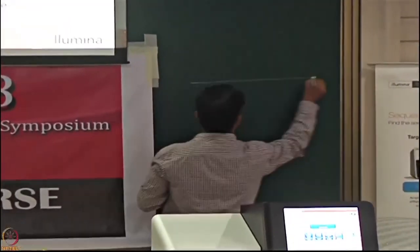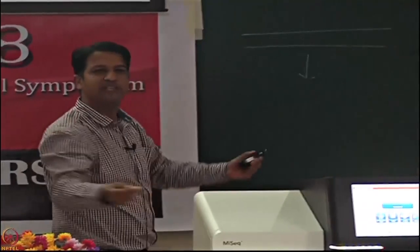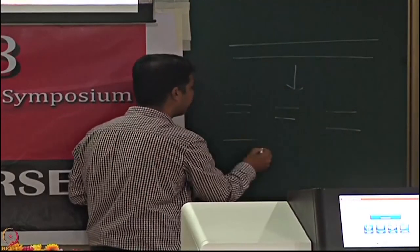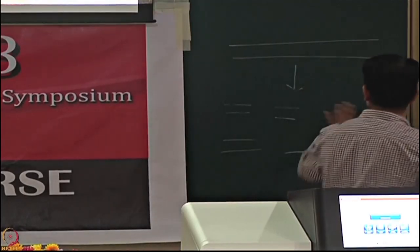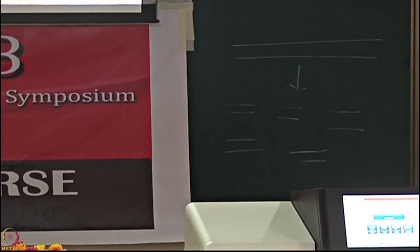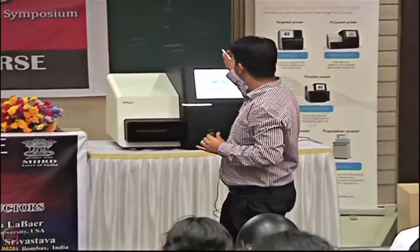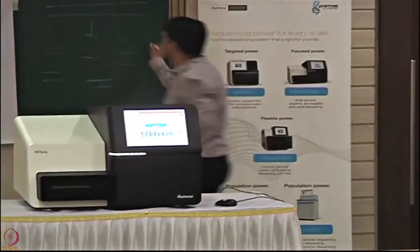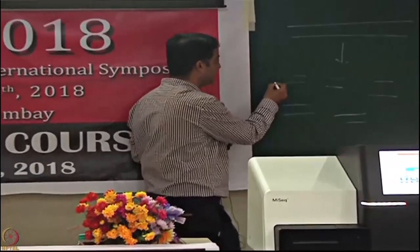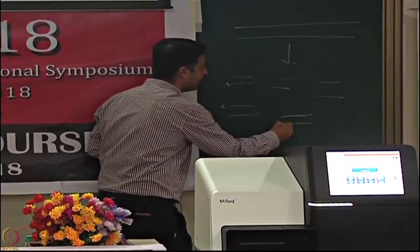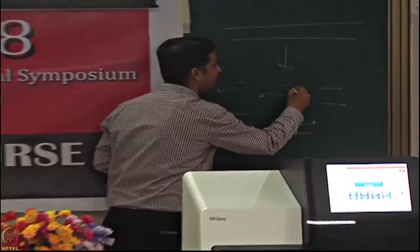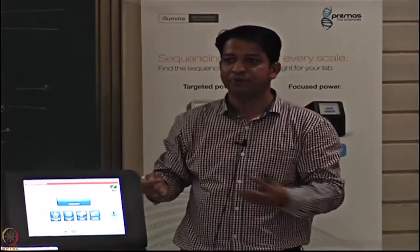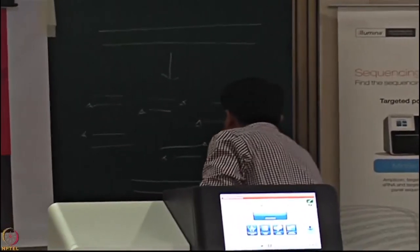In NGS library preparation, we first fragment the genome — say into 600 bp pieces — into millions of fragments. Since these are unknown, we first convert all ends into blunt ends using a polymerase. The polymerase adds an A to all ends. We then have adapters containing a T overhang, and a simple ligation step ligates the adapters to all the fragments.